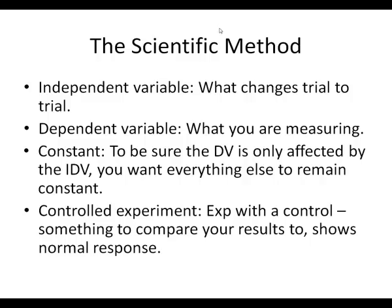Whenever you have an experiment you're trying to keep as many things constant as possible, but we can't always do that — some things are going to change. One of the ways we account for that in our results is by having a control, which is something we can compare our results to.